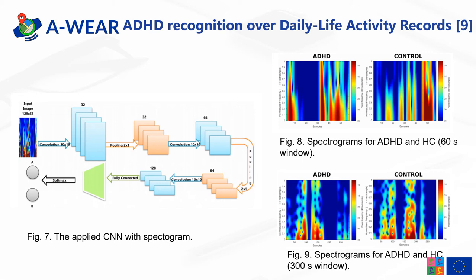Other scientists also used CNNs with spectrograms, but for ADHD recognition, obtaining 98.6% accuracy for a 300-second window length. They used the aggregate signal as the magnitude of three axes and normalization of the data. They also pre-filtered signals with lower activity to avoid interference with the valuable signal for detecting the disease. They found that the choice of window length influences the obtained accuracy — the best results were achieved using a medium-sized window length; however, for Parkinson's disease it could differ. You can see the architecture on the left side and the spectrograms for different window lengths: 60-second and 300-second windows for disease and healthy control — showing they differ visibly.